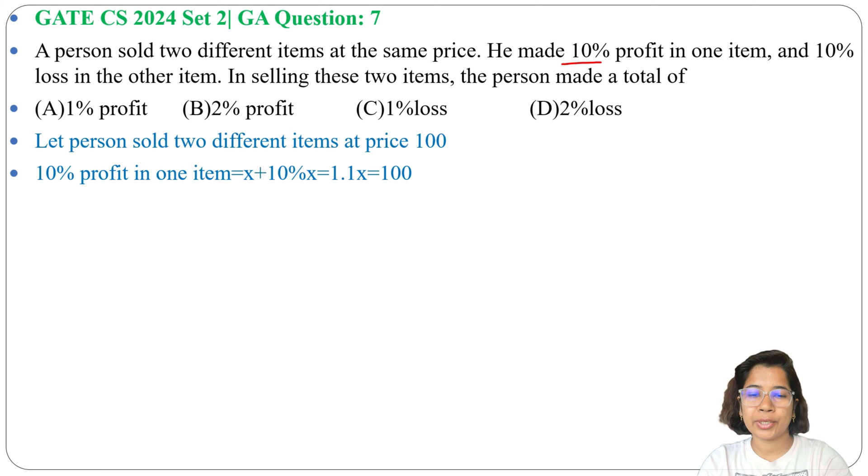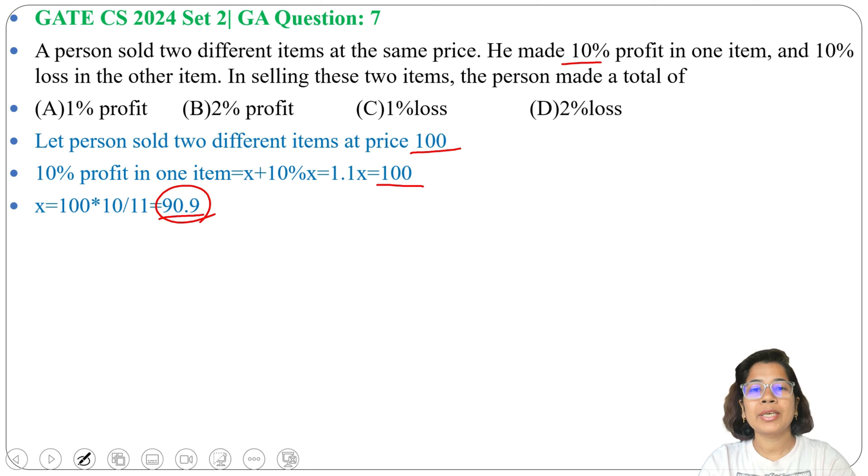So 1.1X equals 100. What is the value of X? X equals 100 divided by 1.1, which is 90.9. That item's cost is 90.9 and he sold it at 100, that's why he got 10% profit.